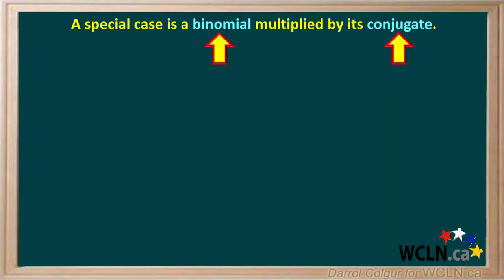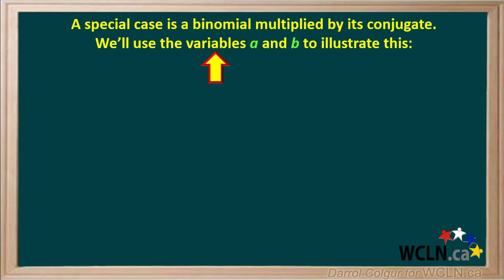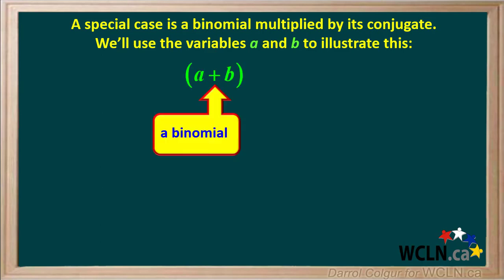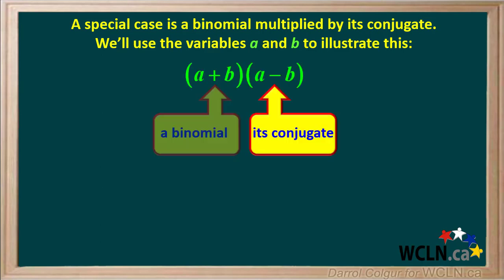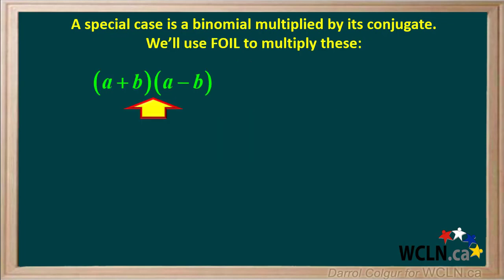A special case is a binomial multiplied by its conjugate. We will use the variables a and b to illustrate this. If a plus b is a binomial, then a minus b is its conjugate. The two terms in the conjugate — a and b — are exactly the same as those in the original binomial; the only difference is the plus sign has been changed to a minus sign. We will use FOIL to multiply these.